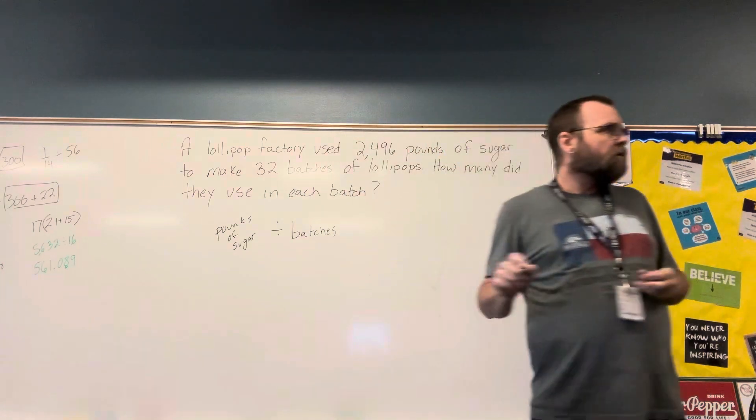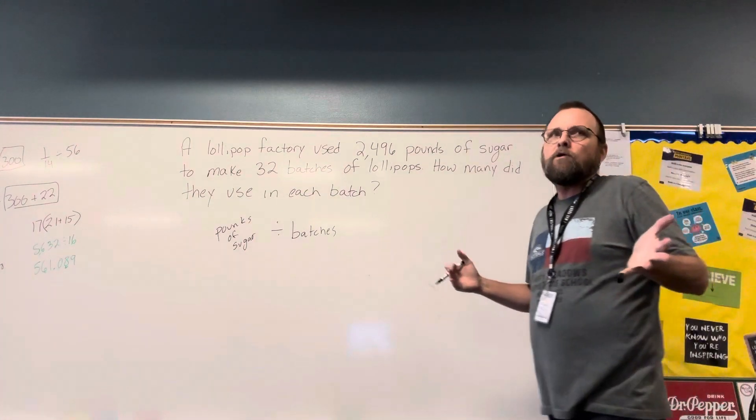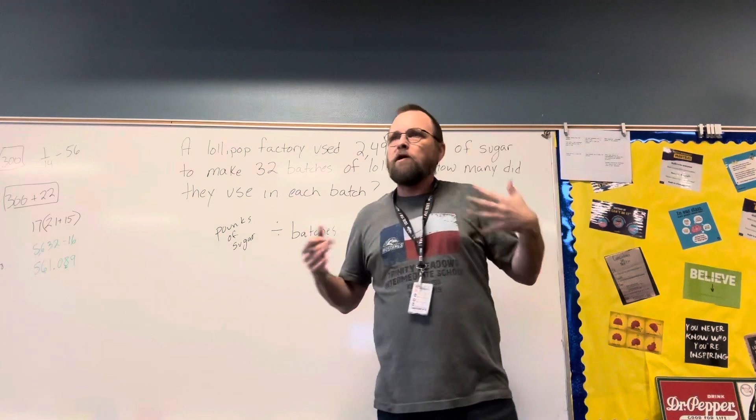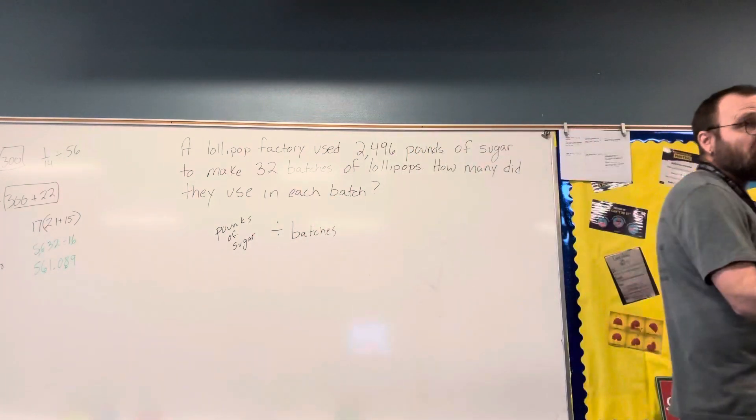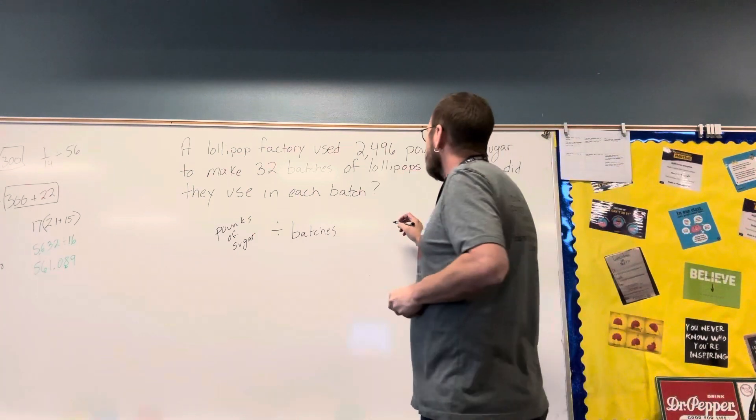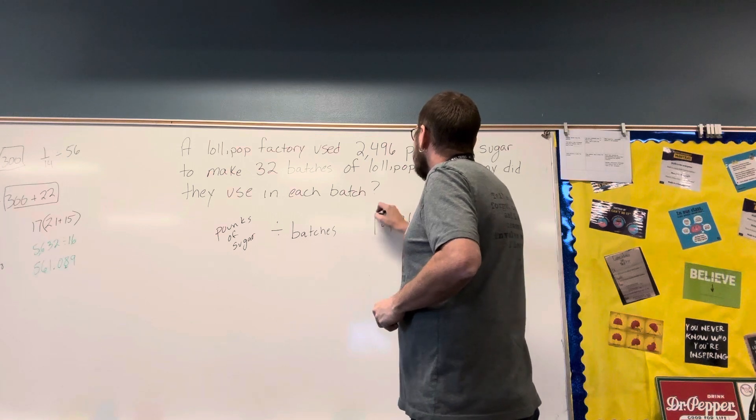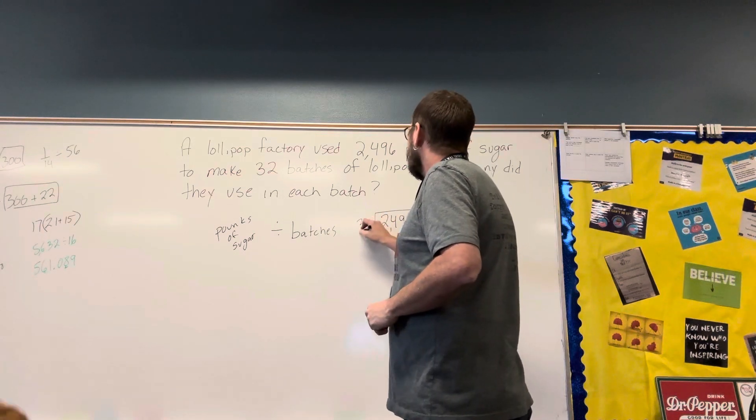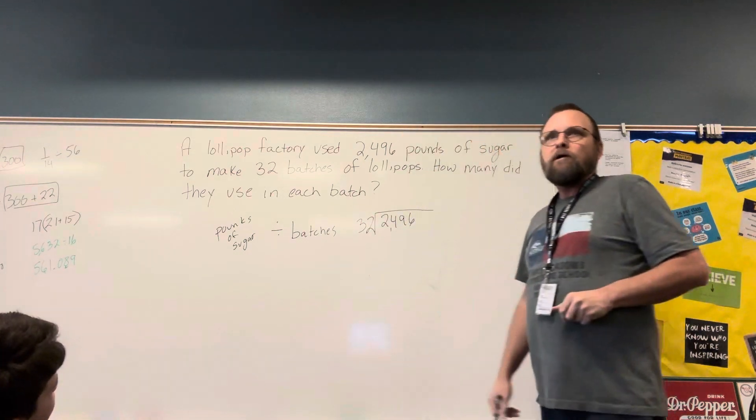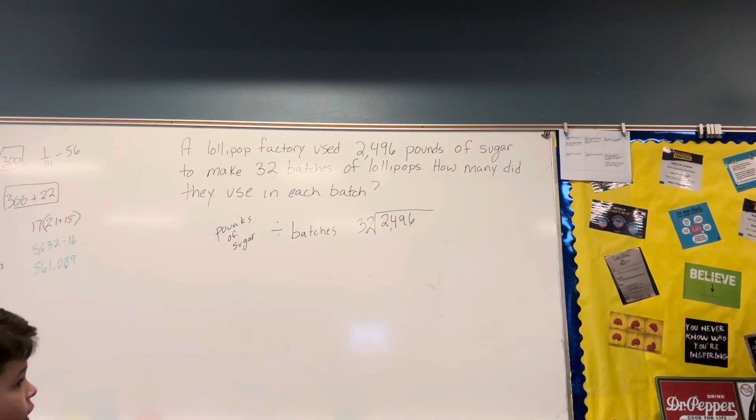So we have, now the cool thing about when we're dividing is you have to list the multiples. So since I told you to figure this out so I don't have to wait for you, I know somebody in here at least has started listing the multiples of our divisor. So we have 2,496 divided by 32.